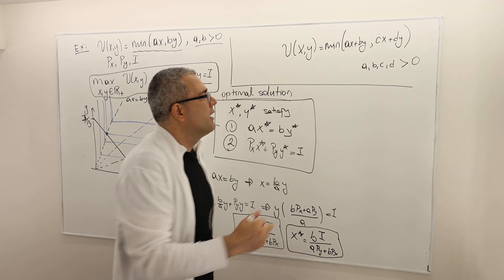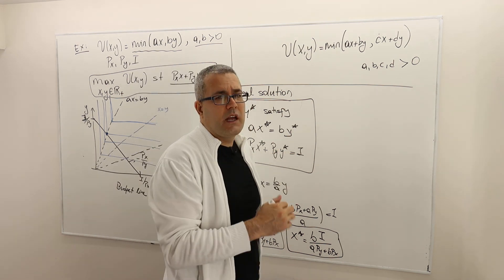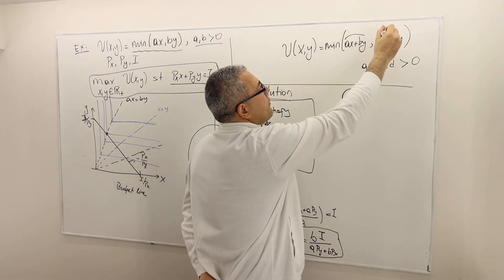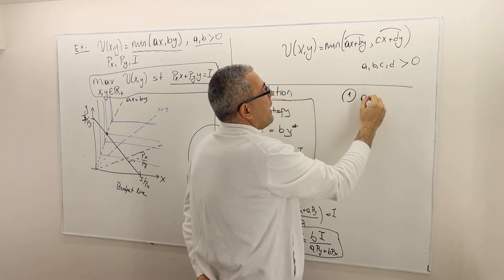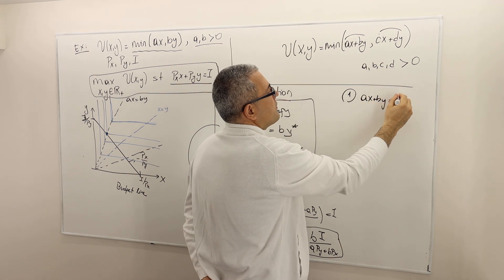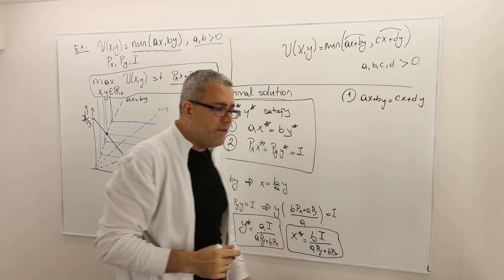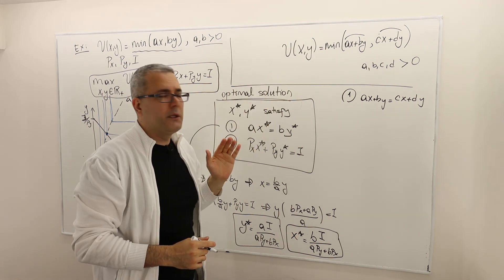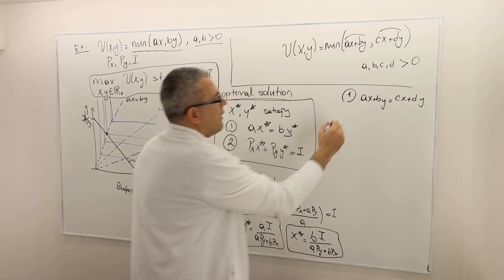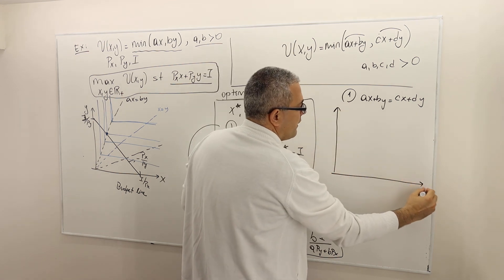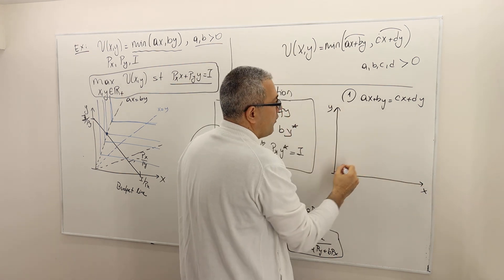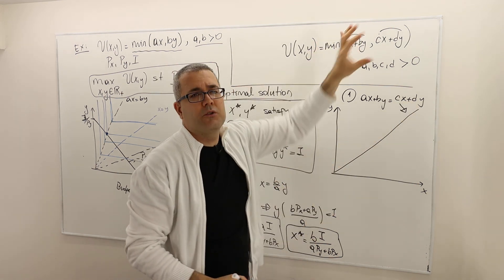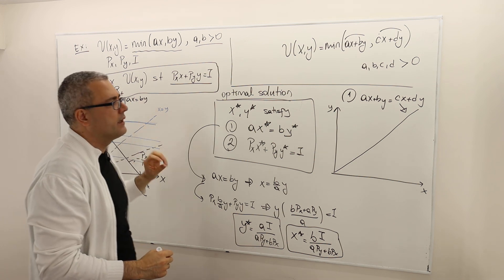But please spend some time to be able to understand how the indifference curves will look like. But what I can say, these indifference curves are going to have two properties. One, this term equals this term, AX plus BY equals CX plus DY, is going to give you the array of kink points movement. So the kink points are going to move in the XY space on this line, which is exactly equal to AX. So the first term equals the second term. Exactly the same idea here.